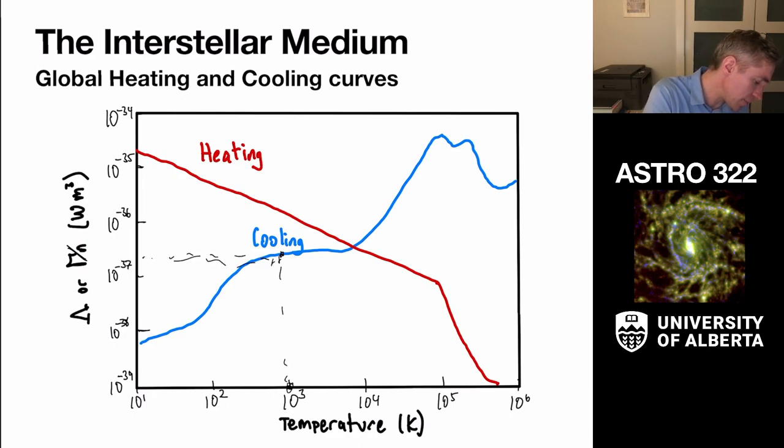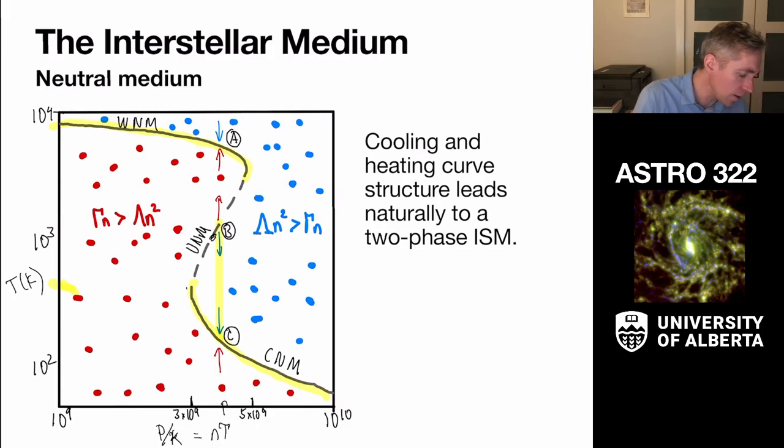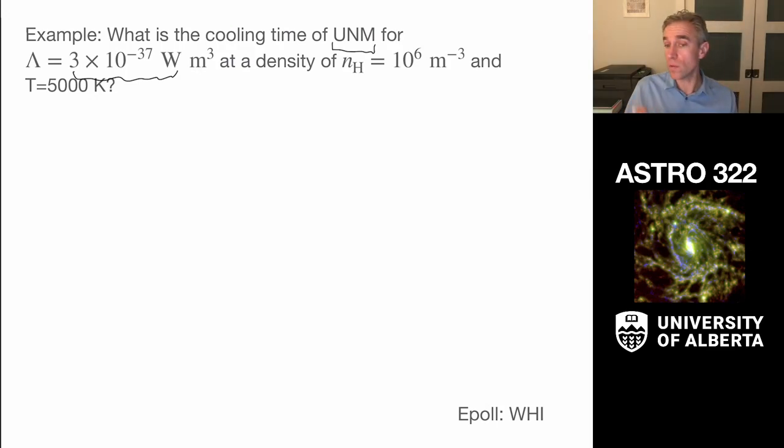So that's about what you would get at 1,000 Kelvin. We read up and it's about 3 times 10 to the 37, and that's appropriate for something here in the unstable neutral medium. I'd like to understand, how long will it take to cool from the temperature of 1,000 Kelvin down to not much at all?